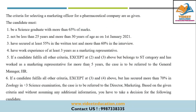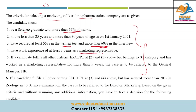The question paper starts with comprehension-type questions. They have given almost 5 to 6 different criteria for selection of a candidate — specifically for selecting a marketing officer in a pharmaceutical company. These include conditions such as the person should be a science graduate, the minimum marks they should have, what their age should be, how many marks they should have secured in the written test and interview, and what their work experience should be.